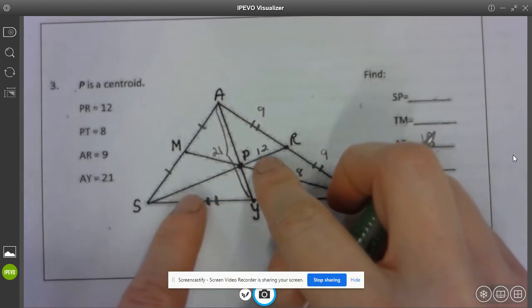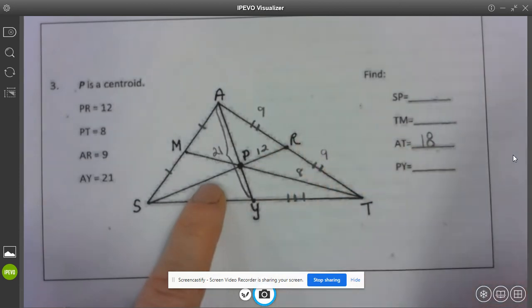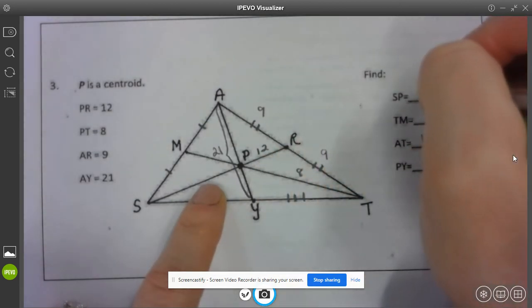So if this whole, well let's start with PR. Remember there are two of these inside of SP so if I double 12 it will tell me what SP is. So this should be 24.